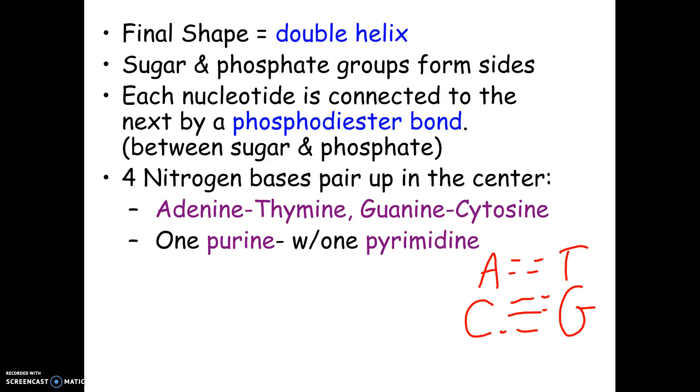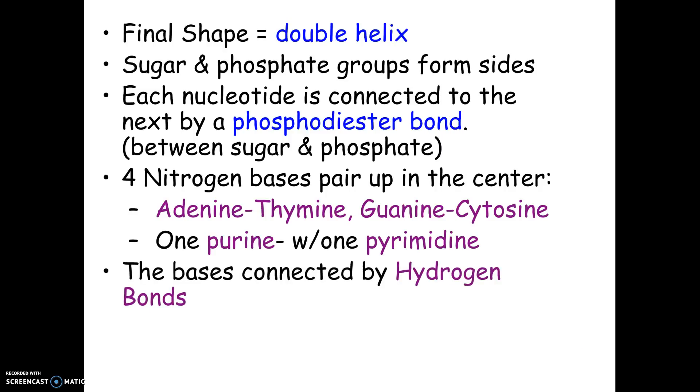So you can identify whether it's an A to T connection or a C to G connection by whether it's two bonds or three bonds. And then the other thing I had told you was angels are pure. And if you can remember angels are pure, A and G are your purines, which would be the ones with double rings. And those are hydrogen bonds, those dotted lines.